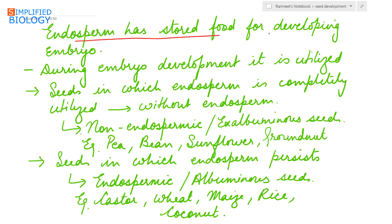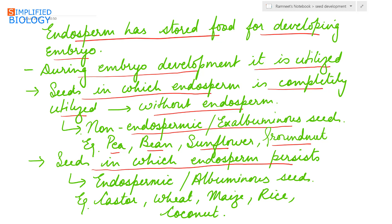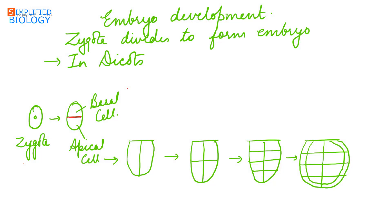Endosperm has stored food for the developing embryo, so during embryo development the endosperm gets utilized. Seeds in which the endosperm is completely utilized are without endosperm; such seeds are referred to as non-endospermic or exalbuminous seeds — examples include pea, bean, sunflower, and groundnut. In some seeds the endosperm is not completely utilized, so it persists; such seeds are known as endospermic or albuminous seeds — examples include castor, wheat, maize, rice, and coconut.